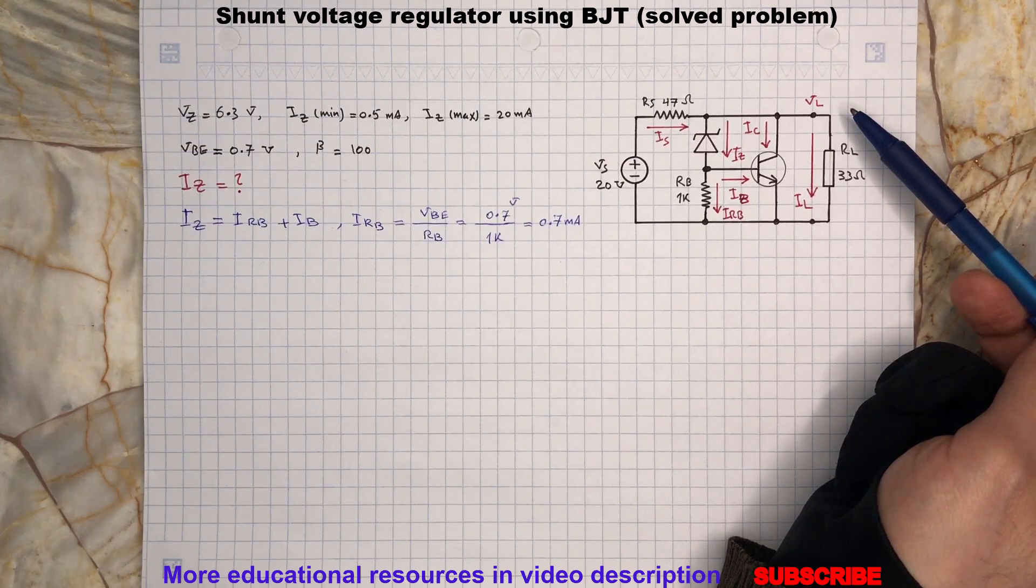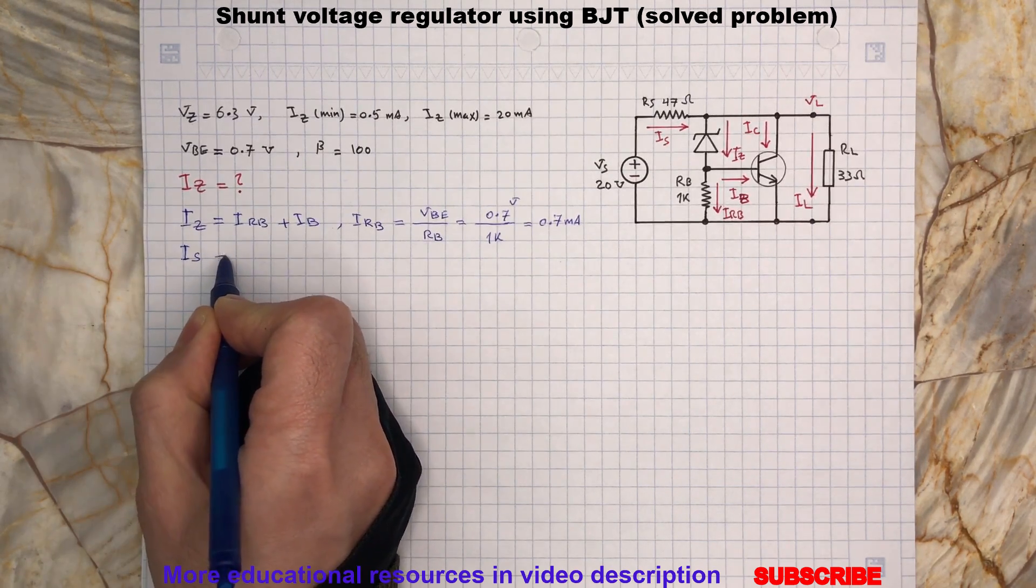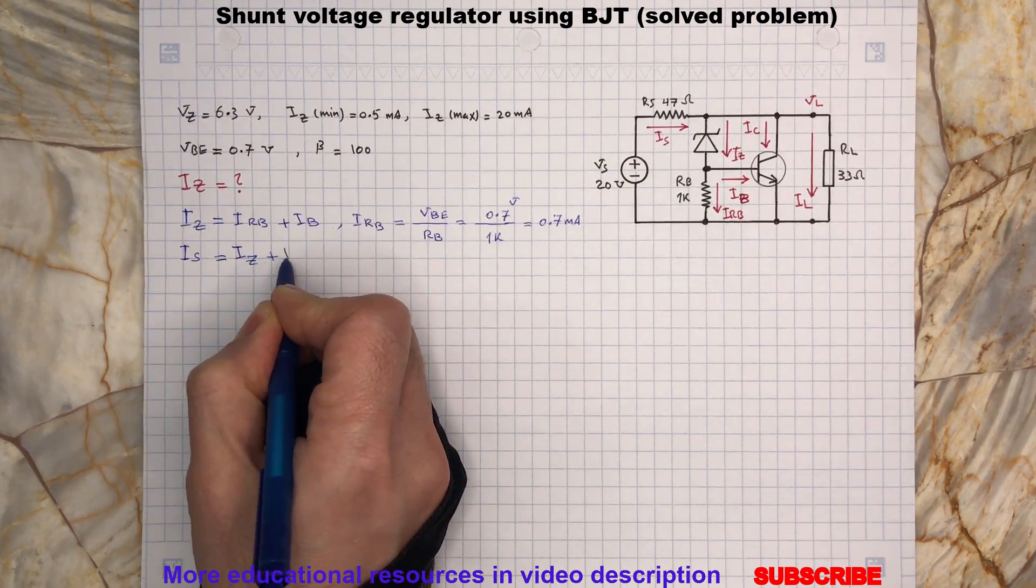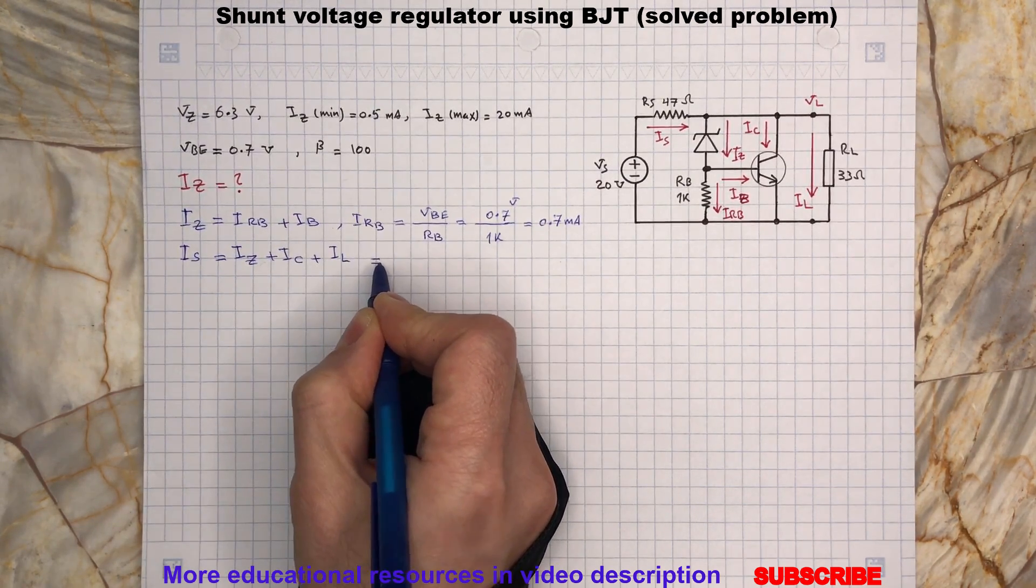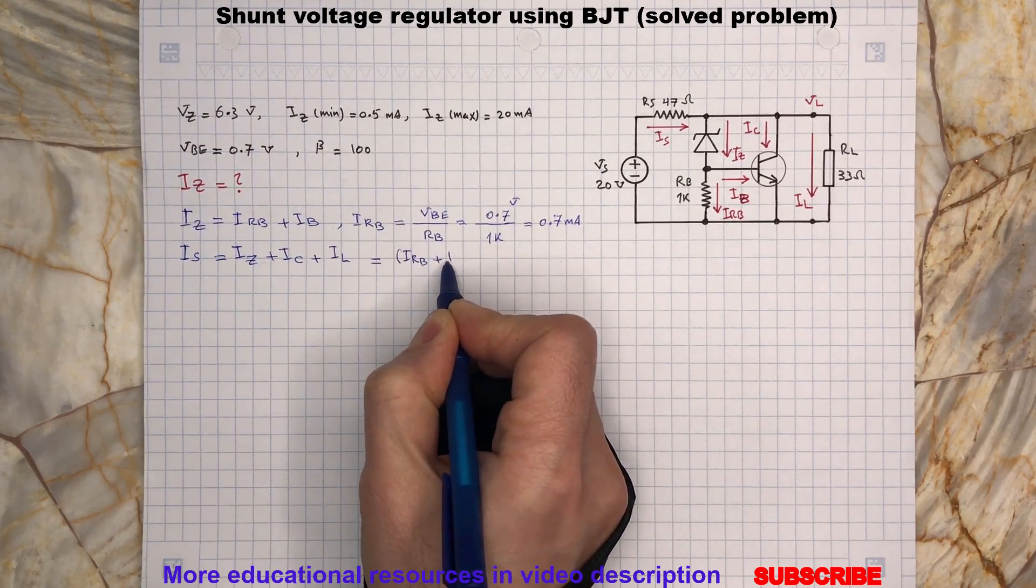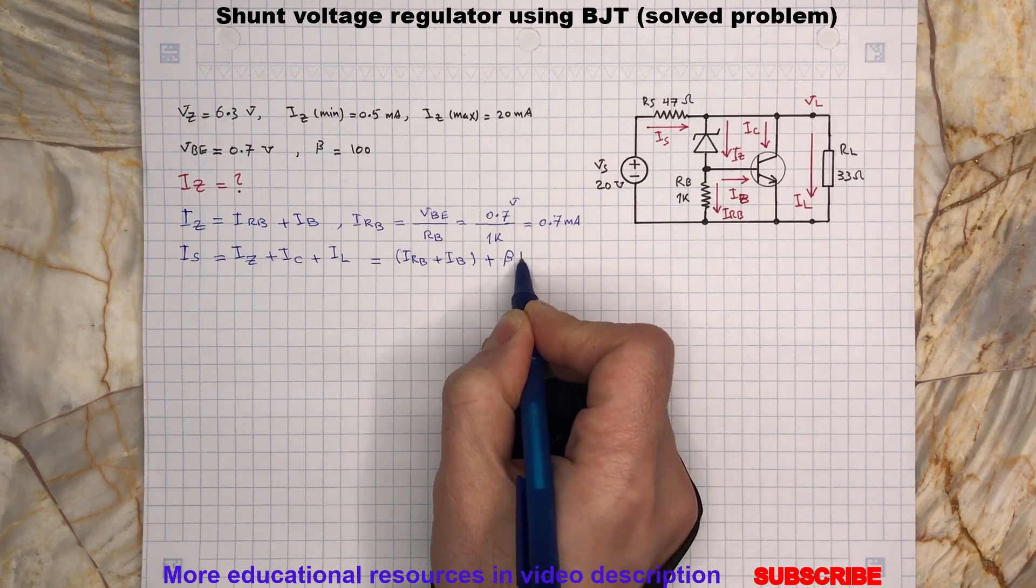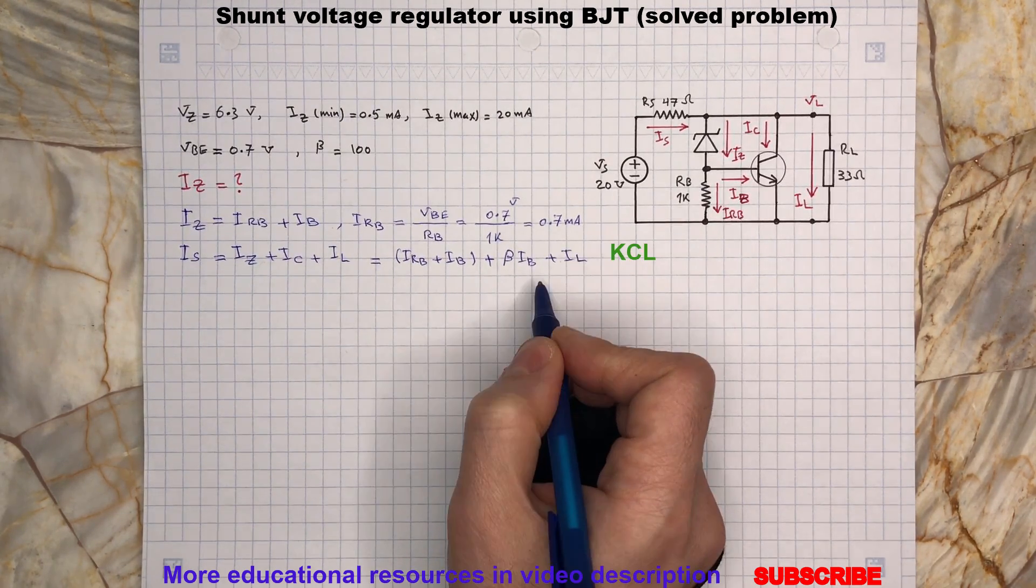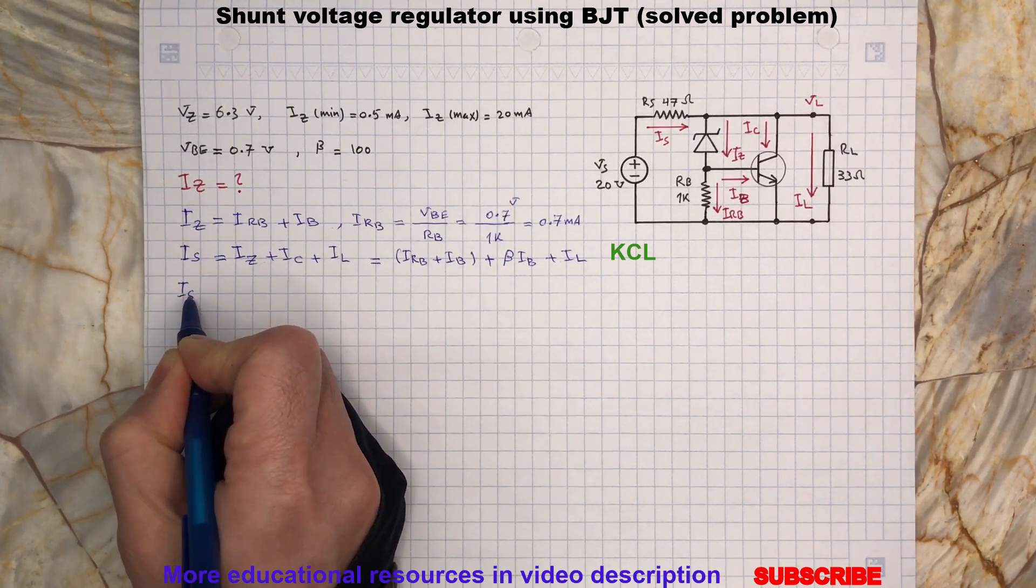KCL at the VL node. For KCL, IS equals...